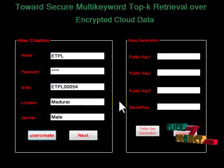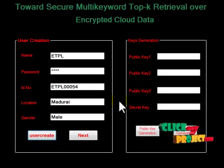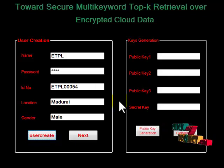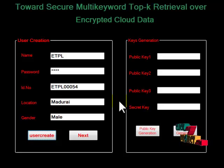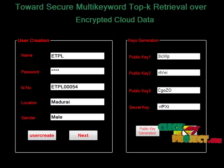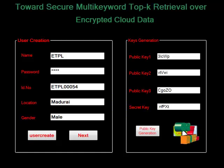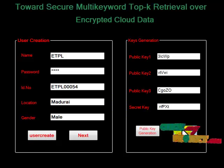The data owner generates encryption keys and provides them to authorized users. The data owner encrypts the search index and data files using these keys, so only the authorized user can decrypt them. For each user, there will be three public keys and one secret key, which the user uses during decryption.